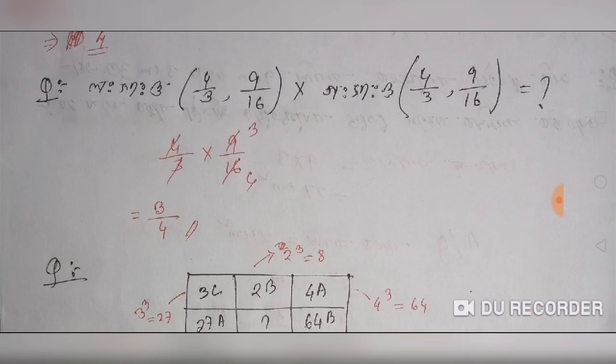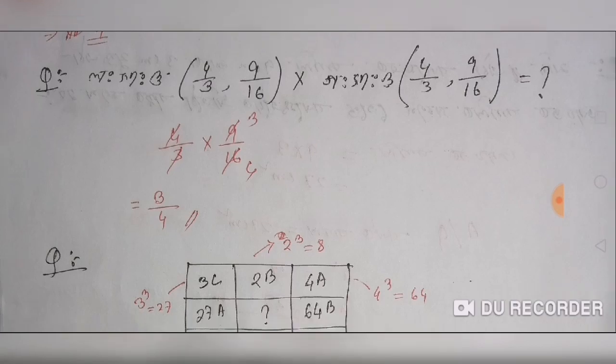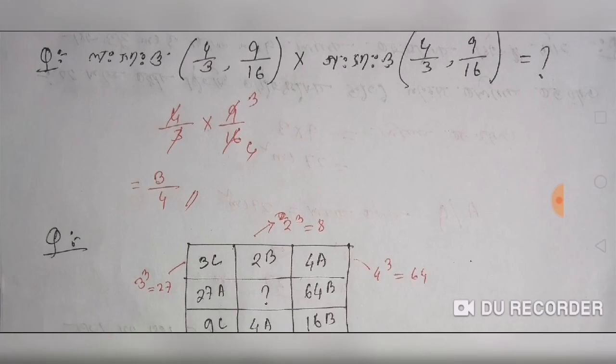It's 4.3 into 9.96. 9 by 60. So this is 4 by 9, and 9 by 16. I'm going to get 3 by 4.